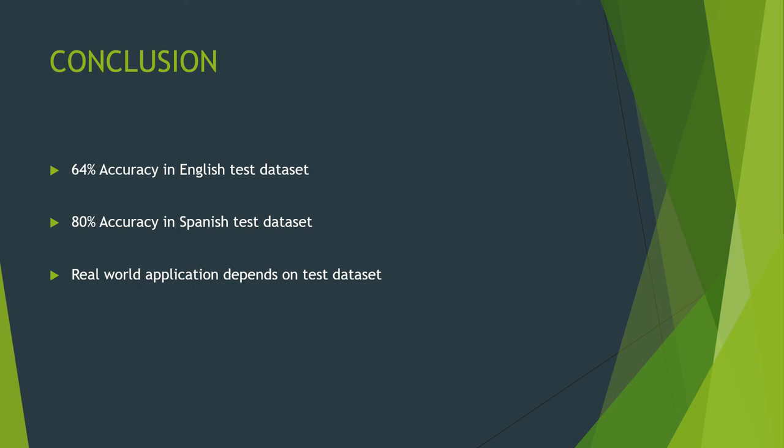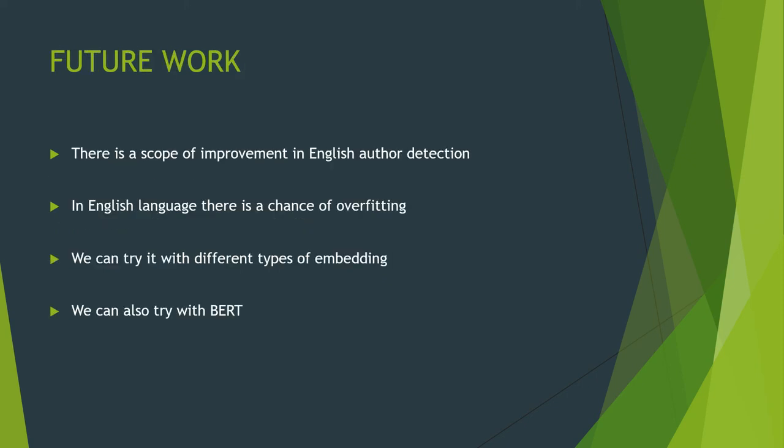However, the accuracy in the real world actually depends on how much the test dataset reflects real-world data. For future work, there is scope for improvement in English author detection. Though we use dropout and recurrent dropout, there may still be overfitting to address. We can try different types of embeddings and also try BERT, though the main limitation for BERT is that we are limited to 512 words.